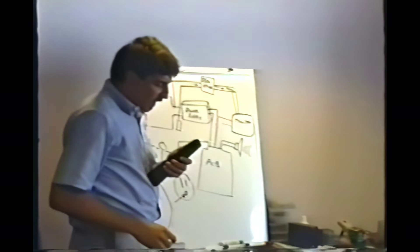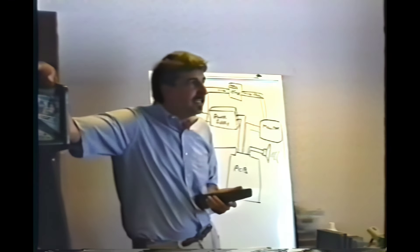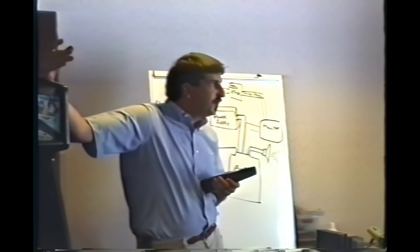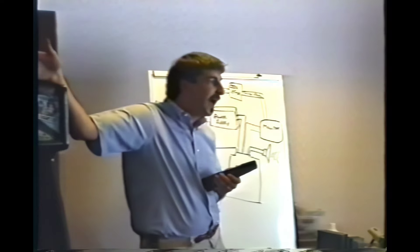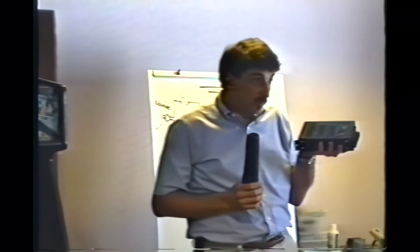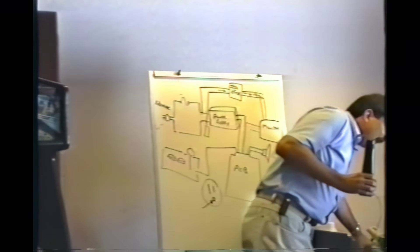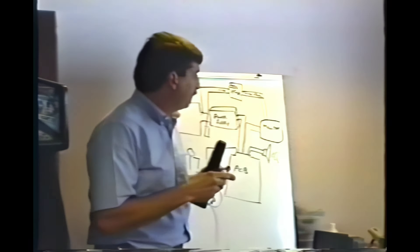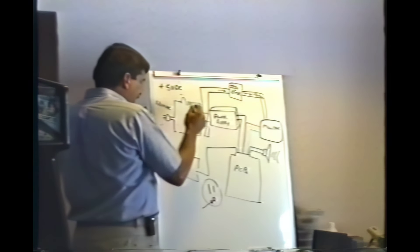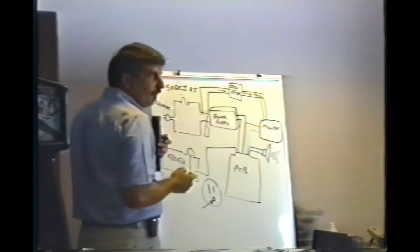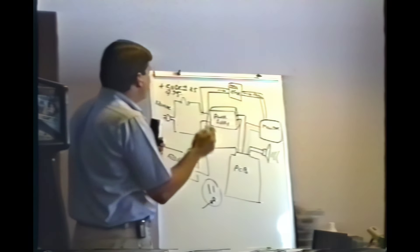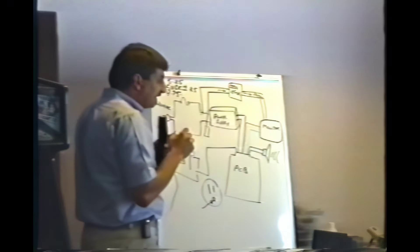One common problem is the 5-volt power supply just goes out of adjustment. After months or years of temperature changes and component value changes, the output voltage may drop. It's really important that the 5 volts be exactly perfect. The 5-volt power supply has to be exactly 5 volts DC, and it can only vary plus or minus a quarter of a volt — meaning if it goes below 4.75, the computer will probably malfunction. If it goes above 5.25, same thing.